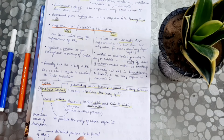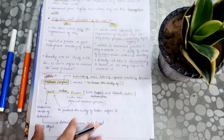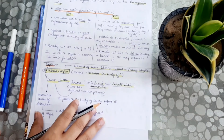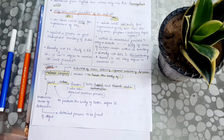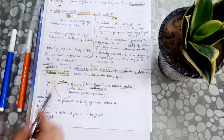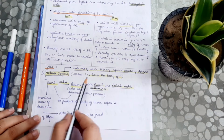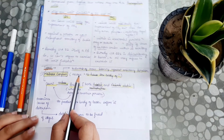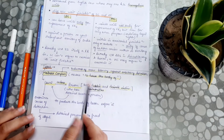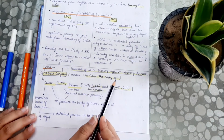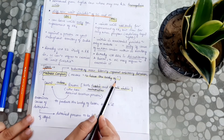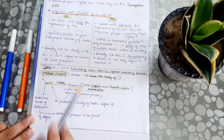Now we will see the types of writs. The first type is Habeas Corpus. This is a Latin term which literally means 'to have the body of.'